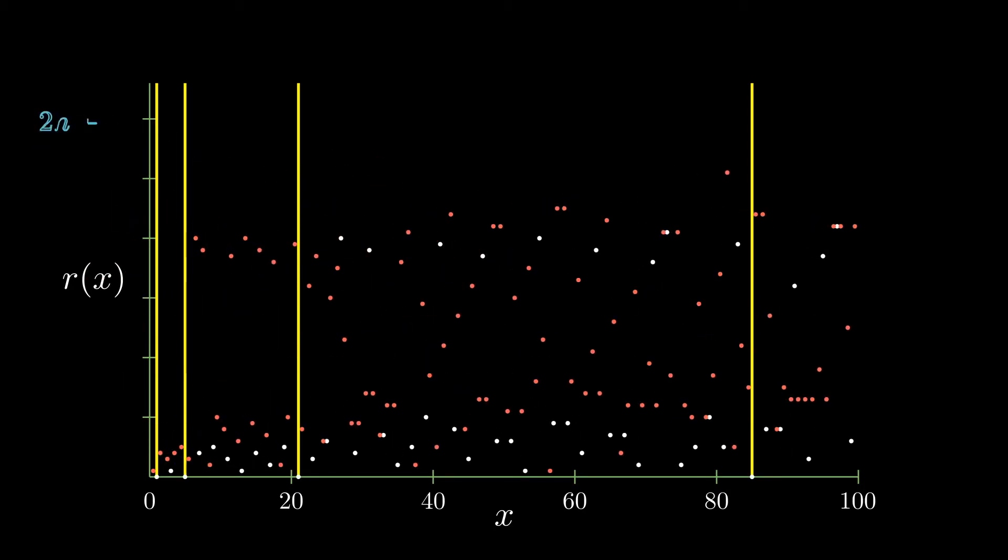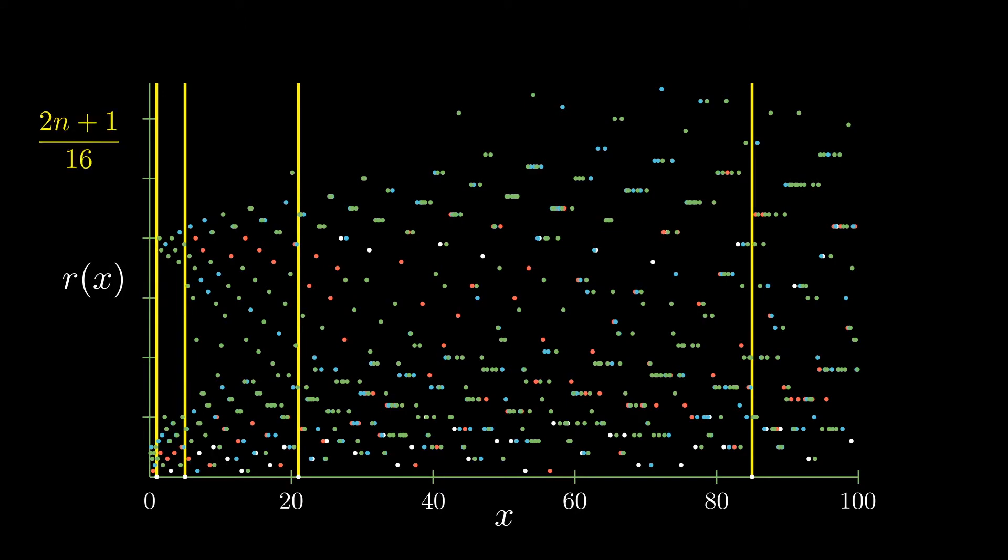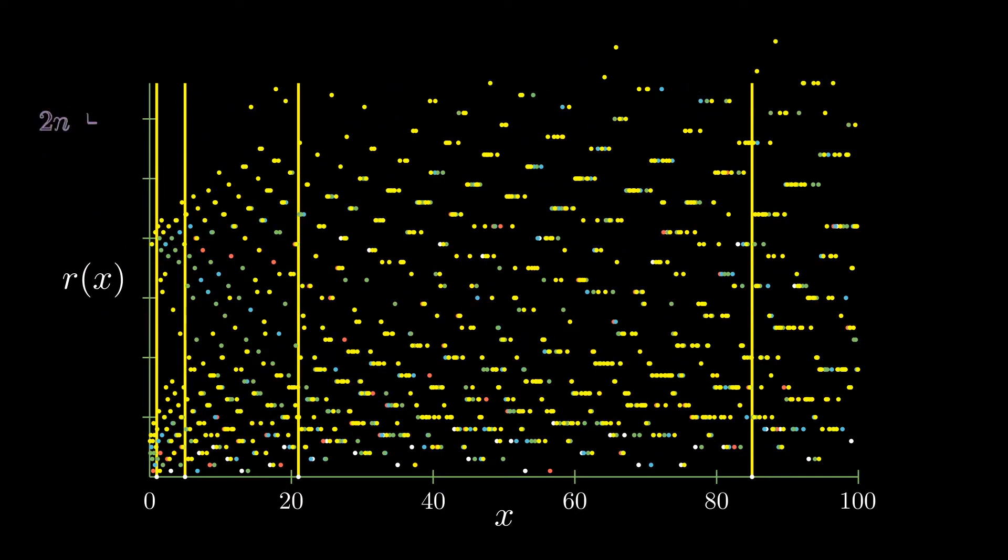But then when you start to include these other fractions that are still less than 100, what you end up seeing is the same exact pattern that you would see if you just plotted a bunch of odd integers.